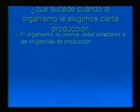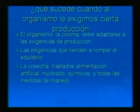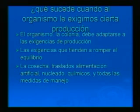¿Qué sucede cuando le exigimos cierta producción al organismo o le exigimos cosas distintas a lo que normalmente está acostumbrado a hacer? La colonia debe adaptarse a la nueva exigencia de producción, lo que tiende a romper el equilibrio que existía normalmente. Estas exigencias nuevas son la cosecha, el traslado, la alimentación artificial, el nucleado, el agregado de químicos y todas aquellas medidas de manejo que tiendan a molestar a la colmena.